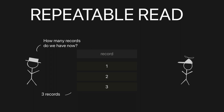But when user two asks how many records there are now, the database still tells them two records. This happens because of how transaction isolation works. The idea is to keep you from being affected by changes made by others. But the downside is that different users might see different results from their queries — it's like everyone's in their own little bubble, not seeing the latest updates others have made.